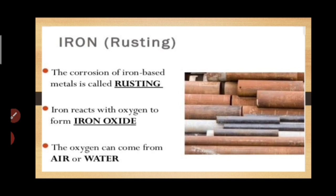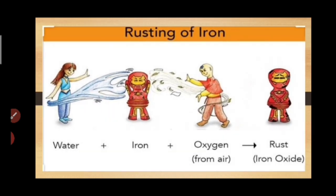Iron reacts with oxygen to form iron oxide. The two conditions necessary for rusting are air (that is, oxygen) and water. When water reacts with iron in the presence of oxygen from the air, rust — that is, iron oxide — is formed.